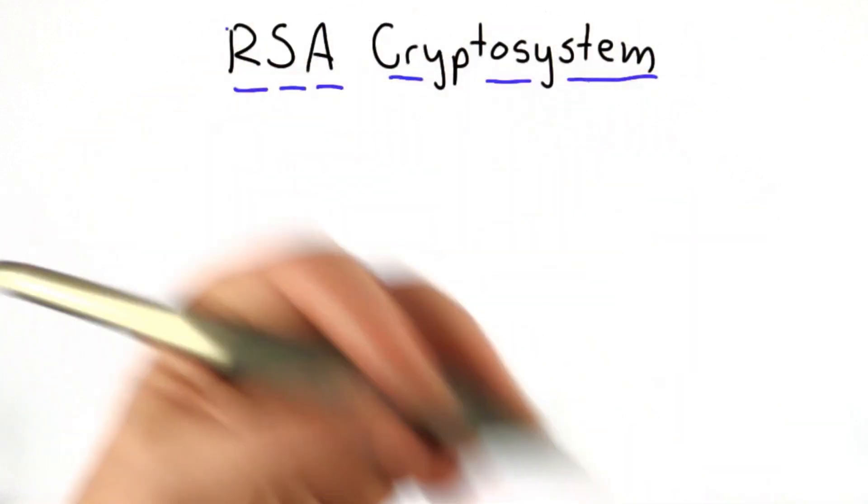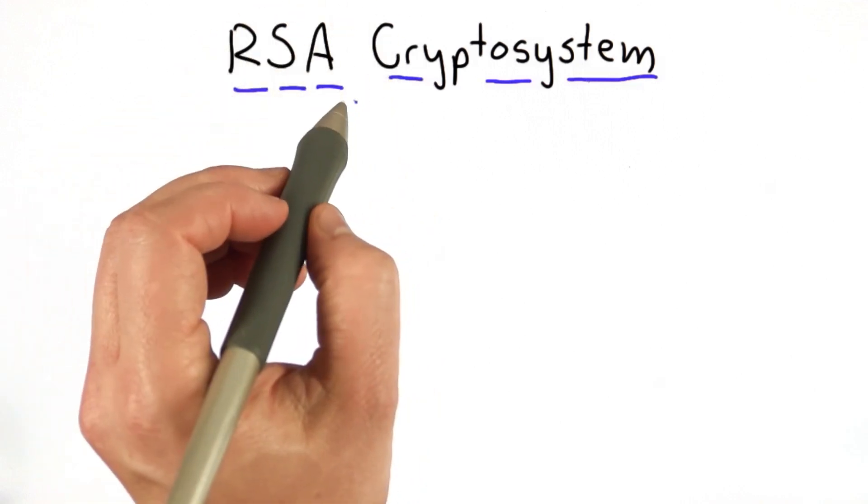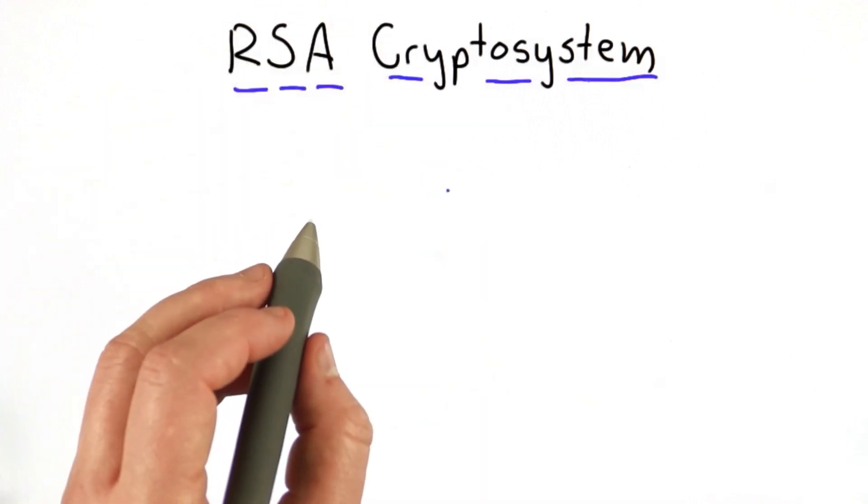The first crypto system to successfully have this property is the RSA crypto system, and that'll be the focus for the rest of this unit.